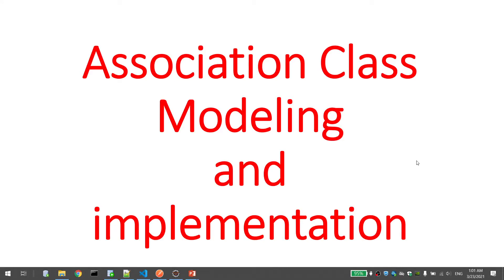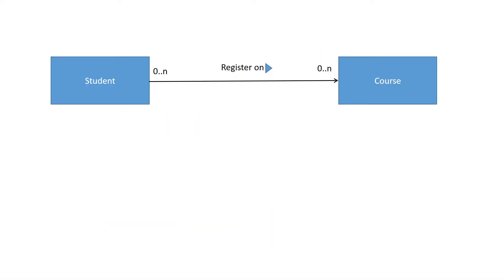Good evening. Today we'll talk about association class modeling and implementation in Java. For example, we have two classes: Student and Course. The student registers on zero or more courses, but the question is where to save the registration date. Should we save it inside the Student class or inside the Course class? Actually, we can't save it in either Student or Course because it doesn't belong to any of them.